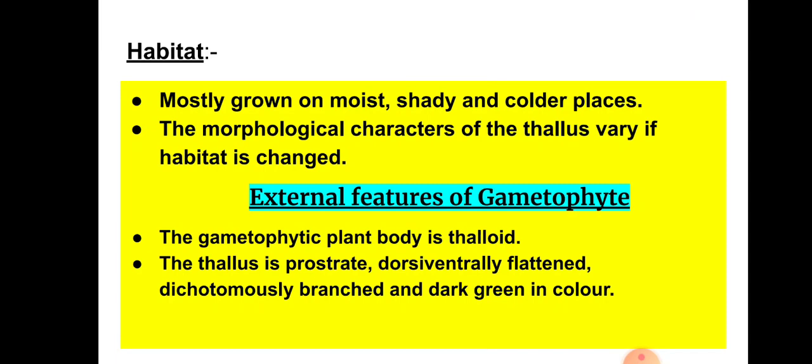Regarding habitat, Sphaerocarpos mostly grows on moist, shady, and colder places. The morphological characters of the thallus vary if the habitat is changed — a change in habitat will affect the morphology of the thallus. This concludes the distribution and habitat of Sphaerocarpos.